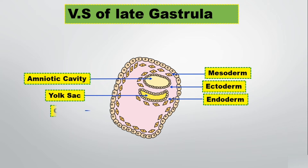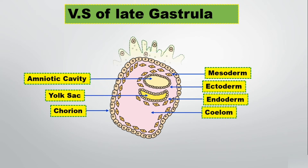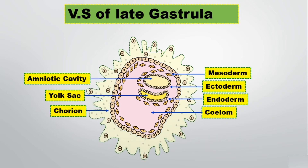And what surrounds these layers is the chorion — a very important layer. And what is present in the mesoderm, there is a cavity which is known as the coelom. So this is the exact structure of VS of late gastrula.